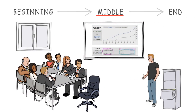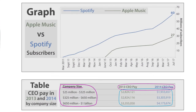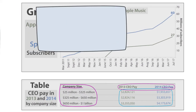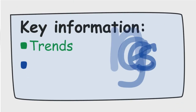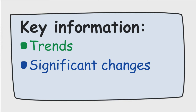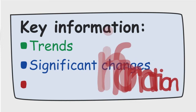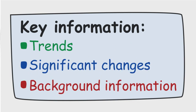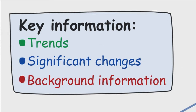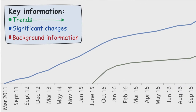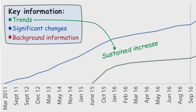Now that your audience knows what they're looking at, it's time to explain some of the key information from the graph or table. Key information would include trends, significant changes like big increases or sudden decreases, and background information that can explain the reasons behind the data. For example, both Apple and Spotify have steadily added subscribers from 2011 until July 2017 with no major fluctuations.